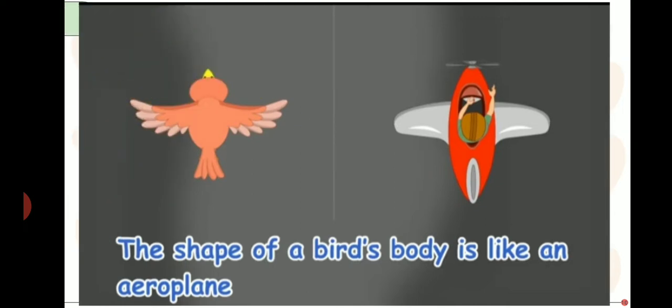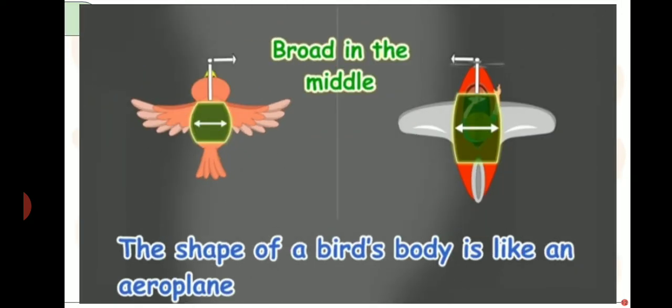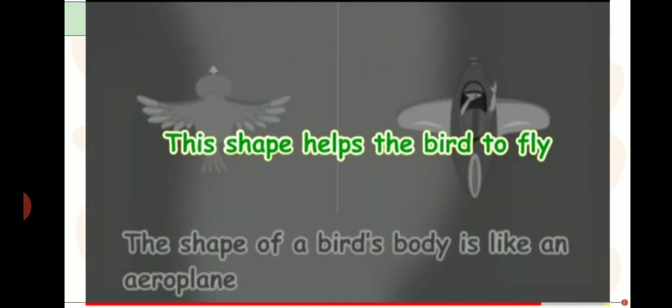Next is the shape of the bird's body. The shape of a bird's body is like an aeroplane — you can compare the two as you can see in the picture. The bird's body is narrow in the front, which helps it cut through the air. It has a broad body in the middle, and at the end it becomes narrow again. With the help of this shape, a bird can fly easily.